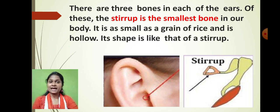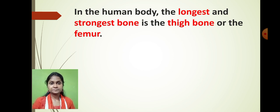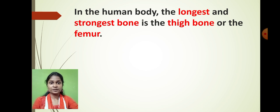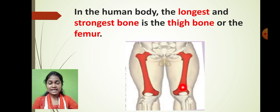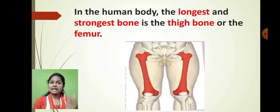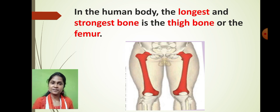There is also a longest and strongest bone present inside our body. The longest bone is present in our thigh region — we call it as femur. Femur is our thigh bone and it is the longest and strongest bone in our body. So, the smallest bone present in the ear is the stapes, and the longest bone present in our body is the femur or the thigh bone.